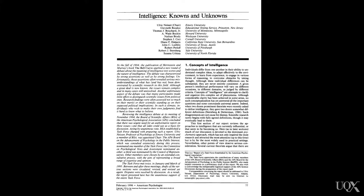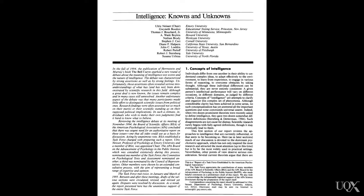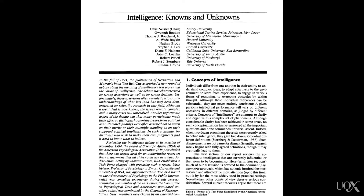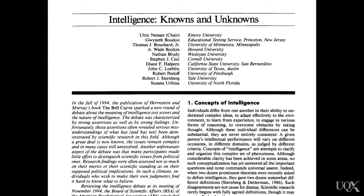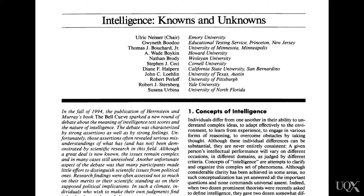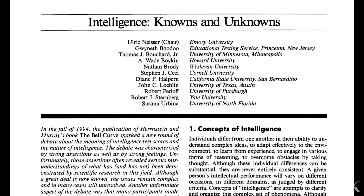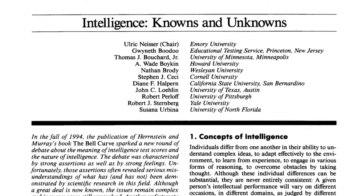So, what is intelligence? While psychologists generally agree with what they're measuring when it comes to intelligence — like a person's ability to learn and remember information, to recognise concepts and their relations, and to apply information to their own behaviour in adaptive ways — they disagree quite strongly about the nature of intelligence and how it works.